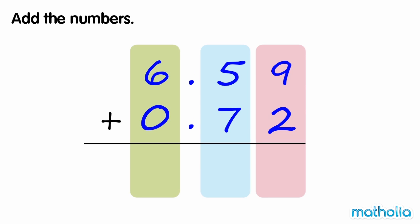Add the numbers. We need to find 6.59 plus 0.72. We start by adding the hundredths. 9 hundredths plus 2 hundredths equals 11 hundredths. We can regroup 11 hundredths into 1 hundredth and 1 tenth.